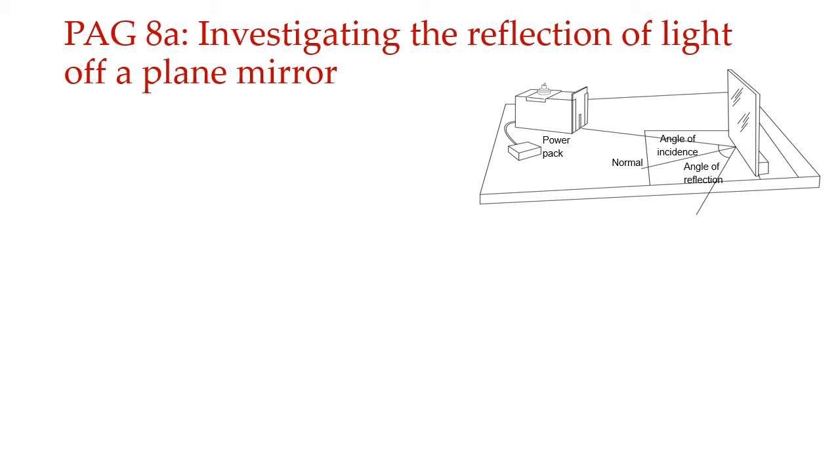PAG 8 is on waves. There are two sections in PAG 8. The first one is investigating the reflection of a plane mirror as you can see. So you can see the components of this diagram on your screen. You have a ray box which is connected to a power pack, and then you have a plane mirror kept. We generally keep it on a white sheet of paper. And that is our initial setup.